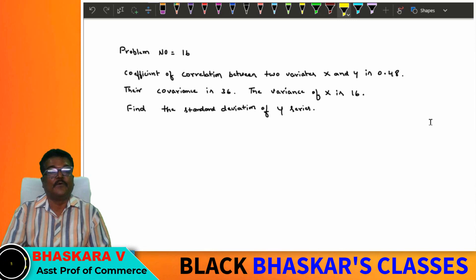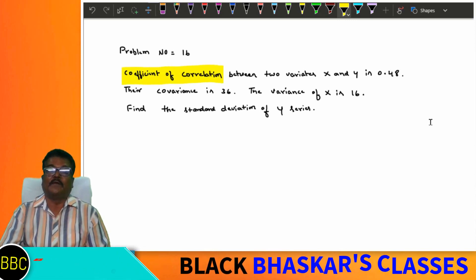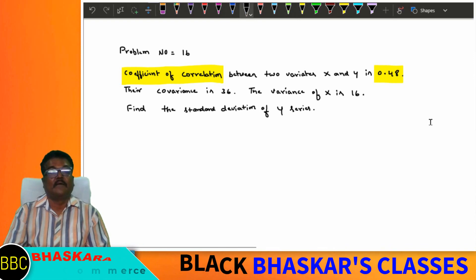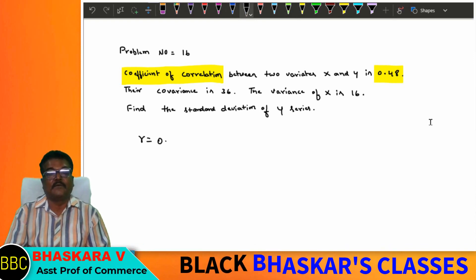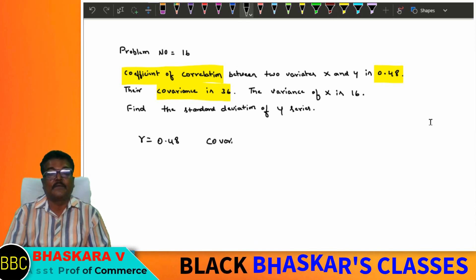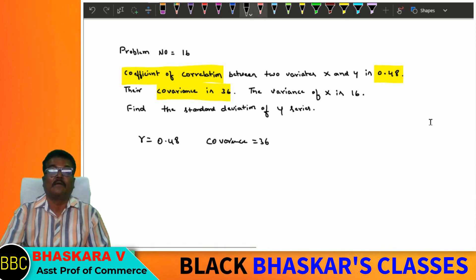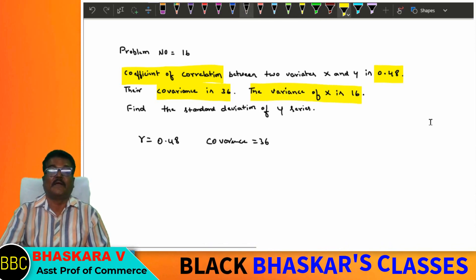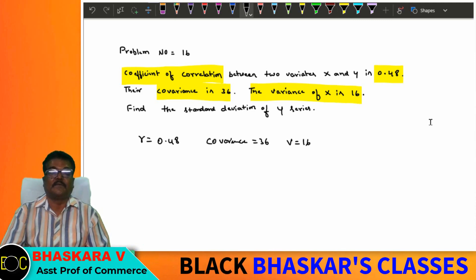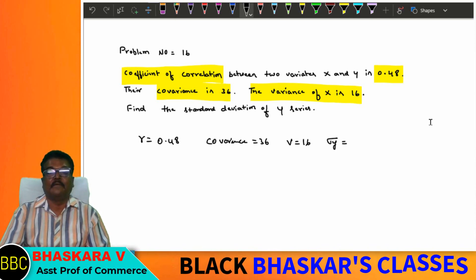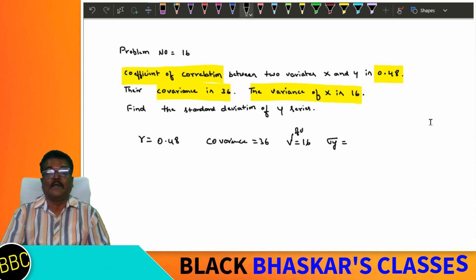Coefficient of correlation between two variables x and y is 0.48. That means correlation r equals 0.48. Their covariance is 36, and the variance of x is 16. I will calculate the standard deviation of y using the variance of x.